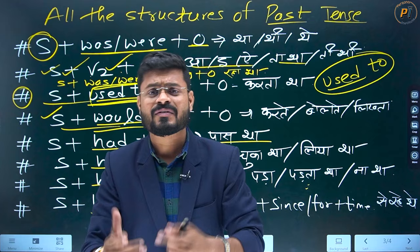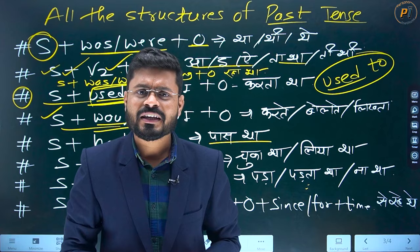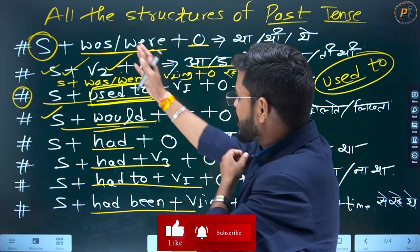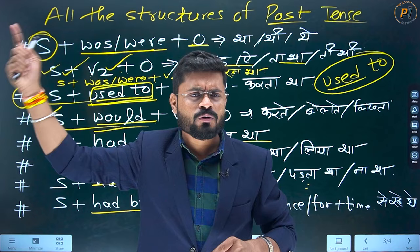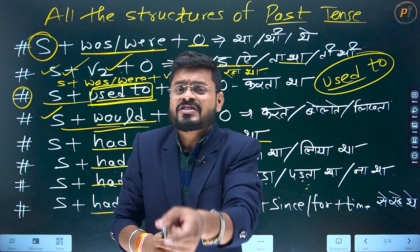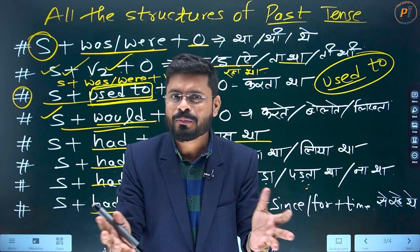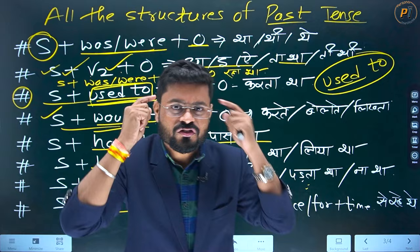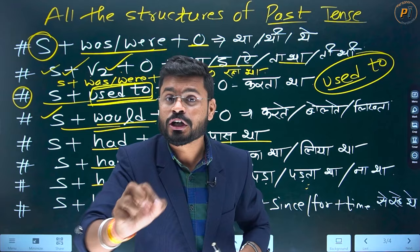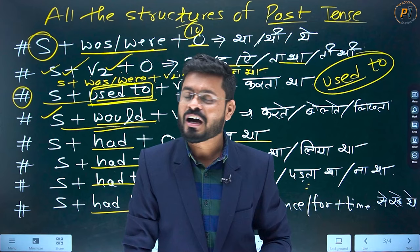Ab aap mujhe batao ki kya walkay mein past tense aapko confusing lagta hai. Ab baat karte hain in ko use kaise karna hai — in ko aap sabse pahle zyada se zyada sentences banao. And remember one thing: jaisa hi koi past ki baat kare, toh automatic past ki helping verbs — did, was, were, had — yeh aapke dimaag mein ghoomte rahein. Jab aap zyada se zyada bolo — past ke structures ko achhe se use karne ki sahi tariqe se koshish karo — phir aap dekhen, automatic aapki sari cheezein theek ho jaayengi.